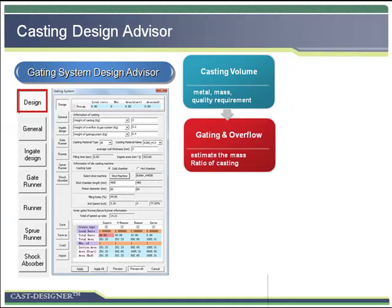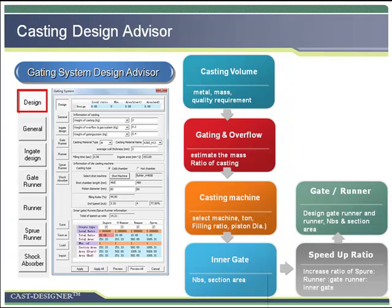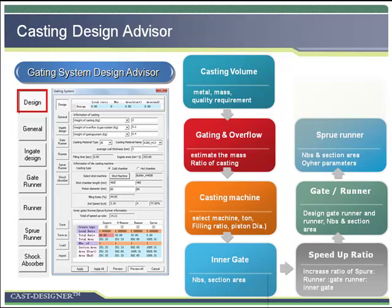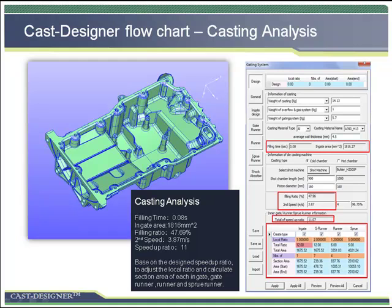Cast Designer is an expert system with KBE technology. It summarizes half a century of knowledge and experience of die casting and provides complete guidelines to help designers. The gating system advisor is one of the most useful wizards in Cast Designer. With this advisor, the designer can get the filling time and inner gate section area based on the casting weight or volume and feature thickness of the casting part. The user can then adjust the numbers and section area of gate runner, runner, and sprue runner. The gating system advisor is also the beginning of casting system design. The user inputs the casting weight or volume and can assume the volume ratio of the gating system and overflow, then define the feature thickness of the casting to get the optimized filling time and inner gate section area.